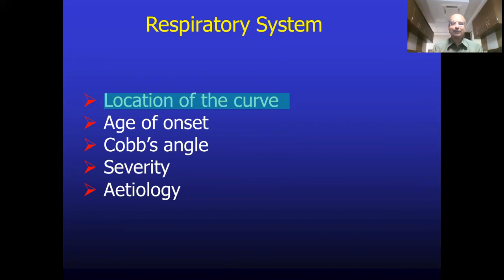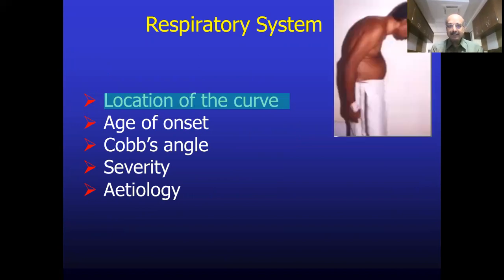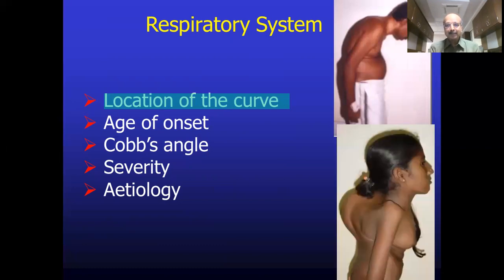Number one: the location of the curve is very important. If the scoliosis involves the cervical and thoracic region, you immediately know you may have problems during airway management, including intubation. So you will prepare for video laryngoscopy or an awake fiberoptic intubation. When the curvature causes deformity at the thoracic level, you know you are dealing with problems with the respiratory system — especially breathing — and the compliance of the chest will be decreased.